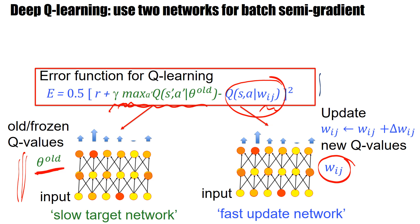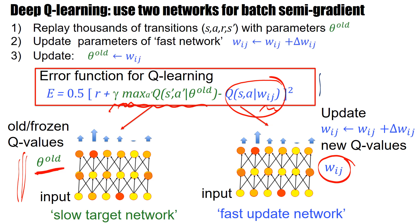Okay, so we will collect many transitions from state action to next reward next state. And all of these transitions are played with the current value of the slow parameters, the parameters of the slow target network. And moreover, we can store the transitions. And then we can randomly access the transitions and replay them so that we get a big batch of possible transitions in some random order. And while we replay all these transitions in random order, we always update the weights of the fast update network.